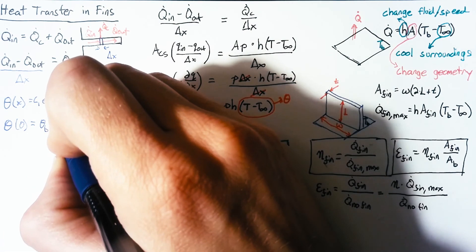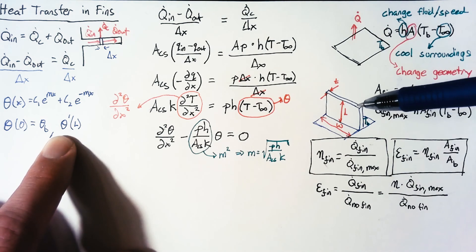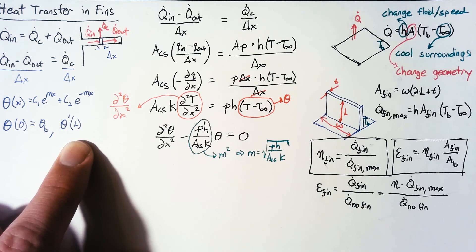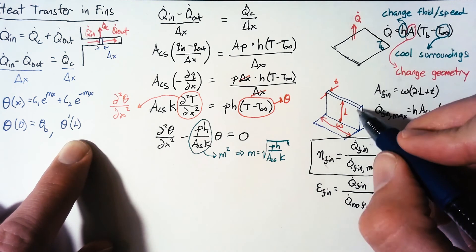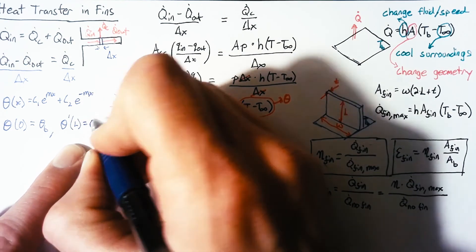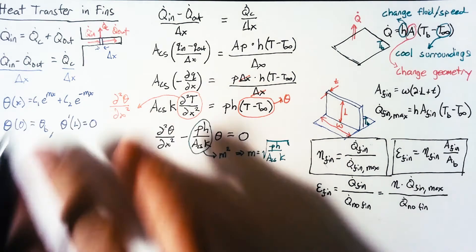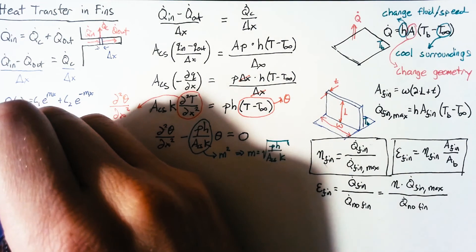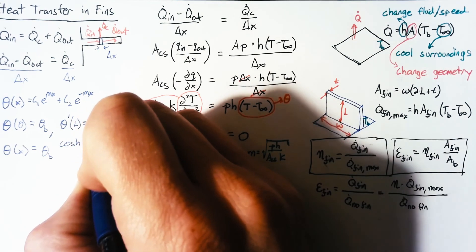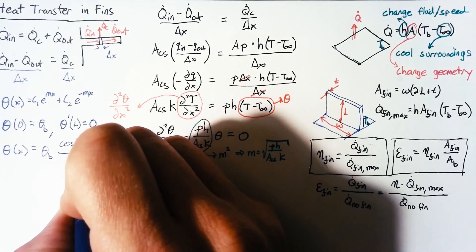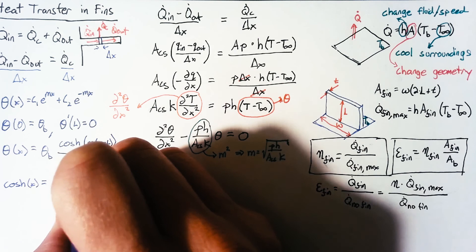The second boundary condition is θ′(L) = 0 at the tip. This is an approximation — in reality there should be a convection boundary condition there, but it is small compared to everything else so we can call it zero. With those two boundary conditions, after some legwork, the solution is θ(x) = θ_B × cosh(m(x − L)) / cosh(mL), where the hyperbolic cosine is (e^x + e^(-x)) / 2.